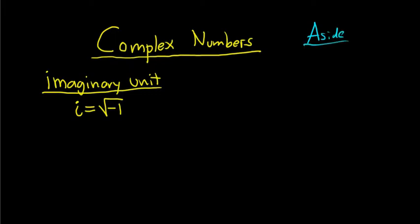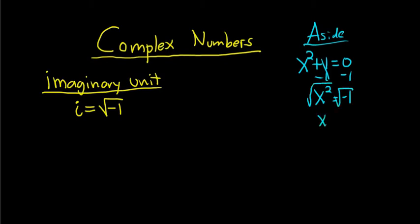A long time ago, people were trying to solve the equation x squared plus 1 equals 0. They subtracted 1 from both sides to get x squared equals negative 1, then took the square root of both sides, getting x equals plus or minus the square root of negative 1. They said you can't take the square root of a negative number — it doesn't make sense. So they made it up and called it i.